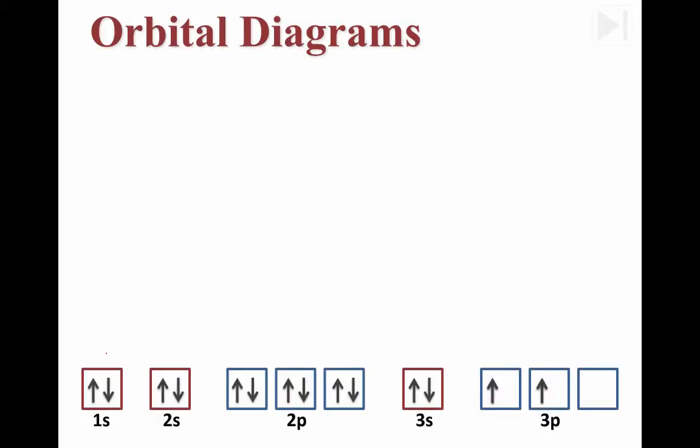In this video, you're going to learn how to represent the electrons in an atom using two different types of notation. The first of which is called an orbital diagram.